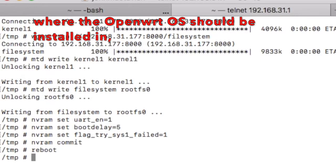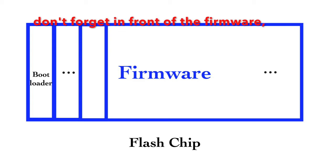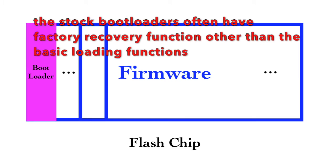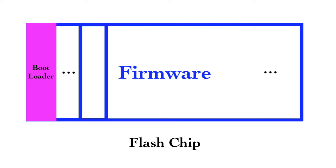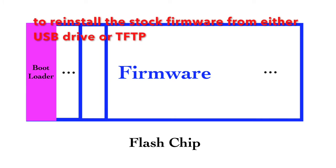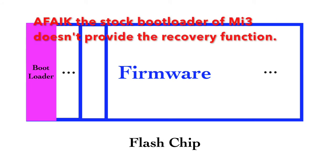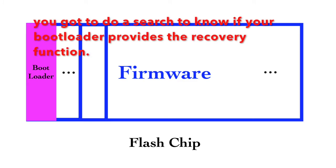That is the firmware part where the OpenWRT operating system should be installed. Don't forget that in front of the firmware there is a bootloader. Usually we don't touch it, but there are different bootloaders in the world — some are better than the stock bootloader. The stock bootloaders often have a factory recovery function: if the operating system does not boot up, we can start the recovery function to reinstall the stock firmware from either a USB drive or TFTP. But not every bootloader is so good. As far as I know, the bootloader on Mi3 doesn't provide the recovery function. You need to search to know if your device's bootloader provides the recovery function.